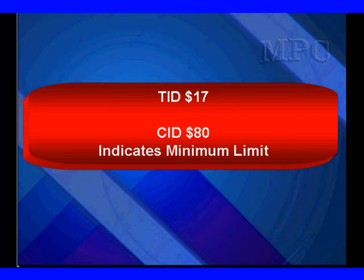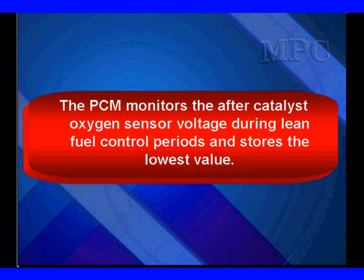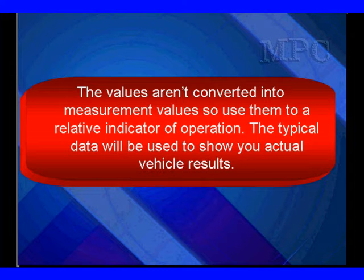The SID 80 indicates a minimum limit. This is true only on JTEC. SPEC would have a maximum limit. The PCM monitors the after-catalyst oxygen sensor voltage during lean fuel control periods and stores the lowest value.